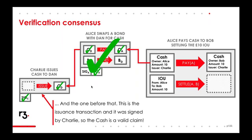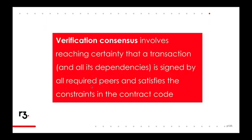Only once Bob has checked all transactions involving the cash back to the issuance transaction from Charlie can he be confident this is a valid claim on Charlie. Unfortunately, there's no way to avoid this in distributed ledger technology — you always have to prove an unbroken chain of custody back from the current state of a particular asset to the transaction when it was first issued onto the ledger. With technologies like Ethereum you don't need to do this because all data is broadcast to all participants anyway, so you already have it. In Corda it's a stark contrast — you don't have this data and must ask for it.